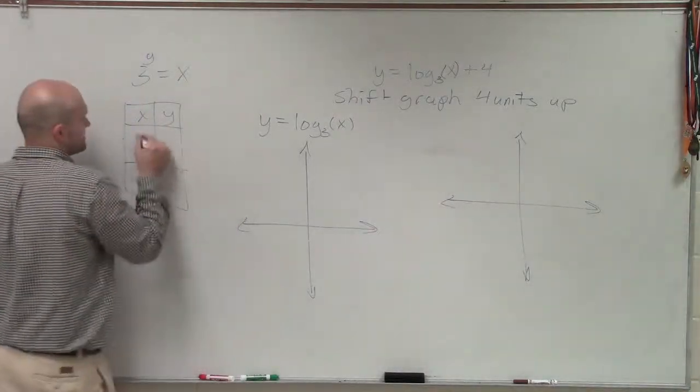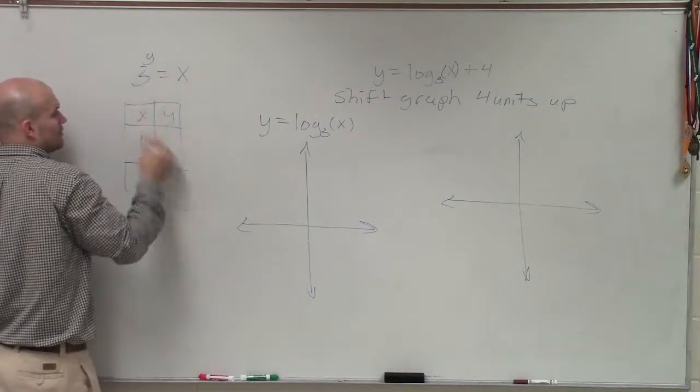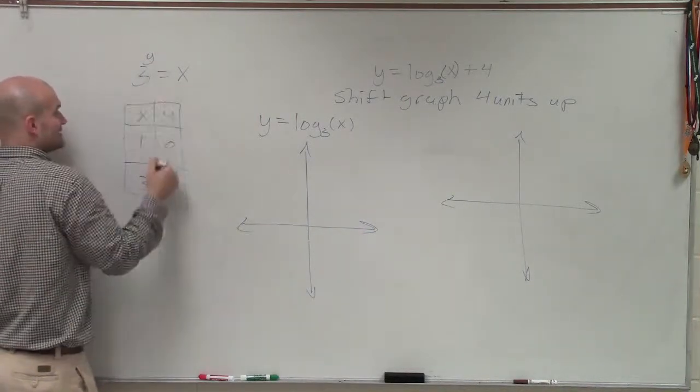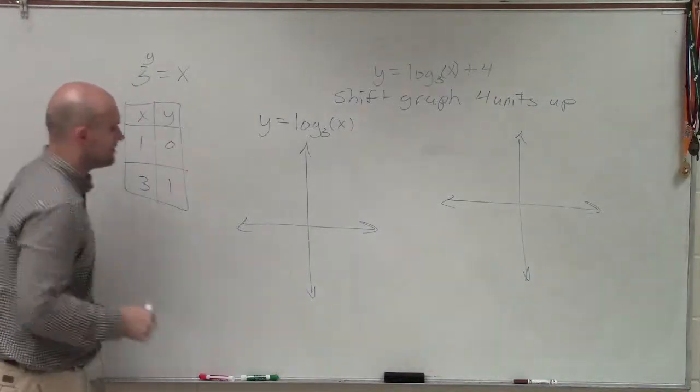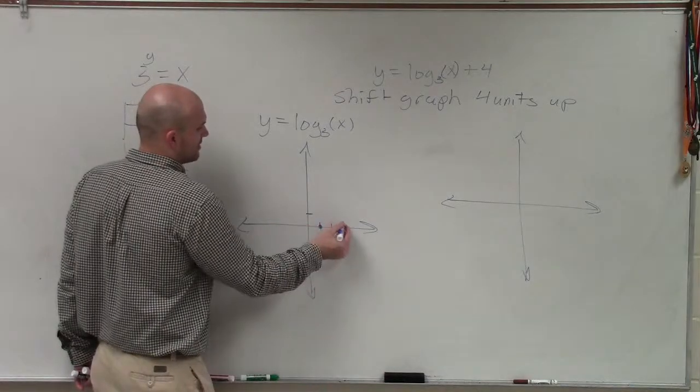I want to choose values when x is going to equal 1 and when x would equal the base. So x equals 1, we know y is going to equal 0. And we know x is going to equal 3 when y equals 1. Therefore, now I can plot those two points: 1 comma 0 and 3 comma 1.